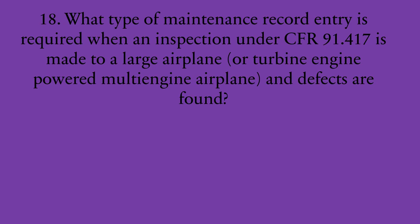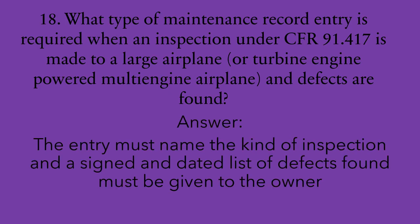Number eighteen: what type of maintenance entry record is required when an inspection under 14 CFR 91.417 is made to a larger airplane or turbine engine powered multi-engine airplane and defects are found? The entry must name the type of inspection — such as continuous inspection or airworthiness inspection — and a signed and dated list of defects found must be given to the owner.